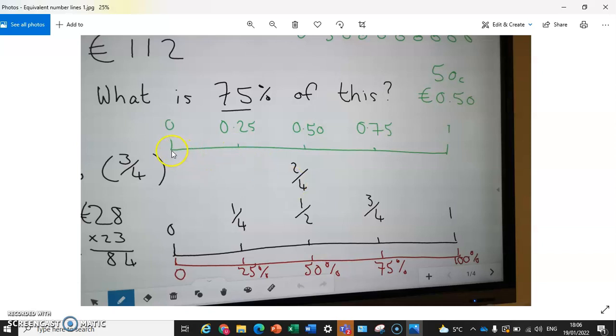We can also draw a third number line up here, zero to one again, and now we're just going to divide it in half. And we know half of something is 0.5, half of a euro is 50 cents, there you go, 0.5. Half of 50 cents is 25 cents, or 0.25 euros.